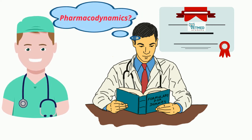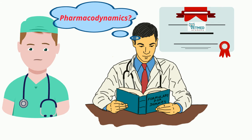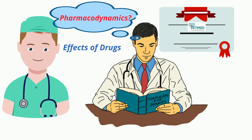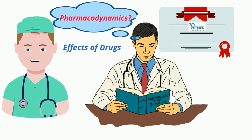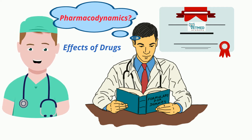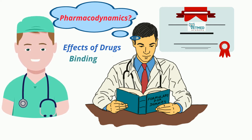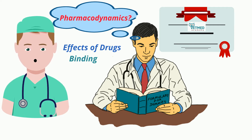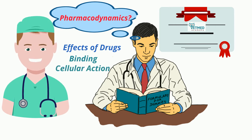What is pharmacodynamics? It's the study of the biochemical and physiologic effects of drugs, and their mechanism of action on the body or on microorganisms and other parasites within or on the body. It considers both drug binding, which refers to the initial consequence of a drug-receptor interaction or target interaction, and drug effect, which refers to the subsequent cellular actions.